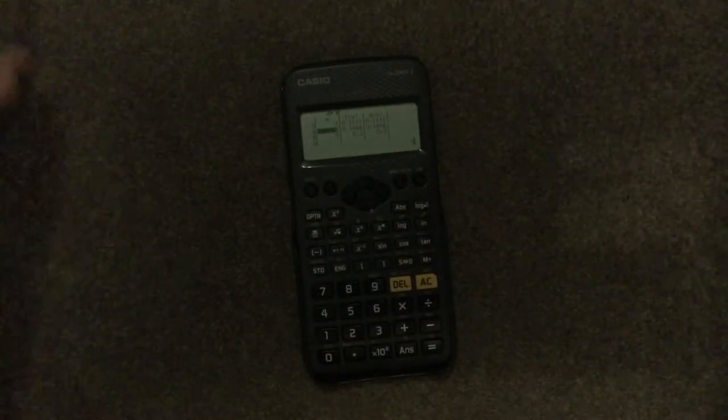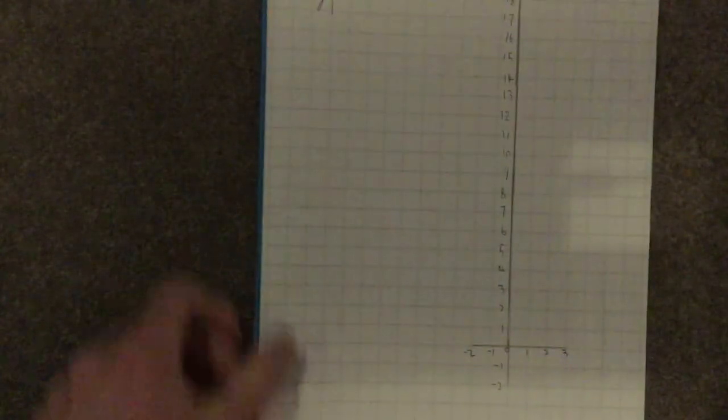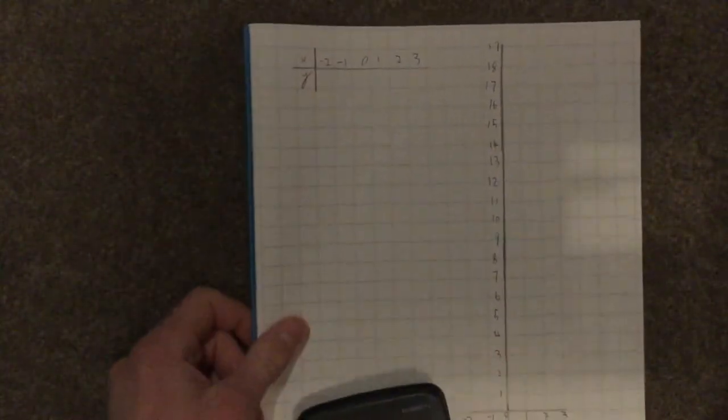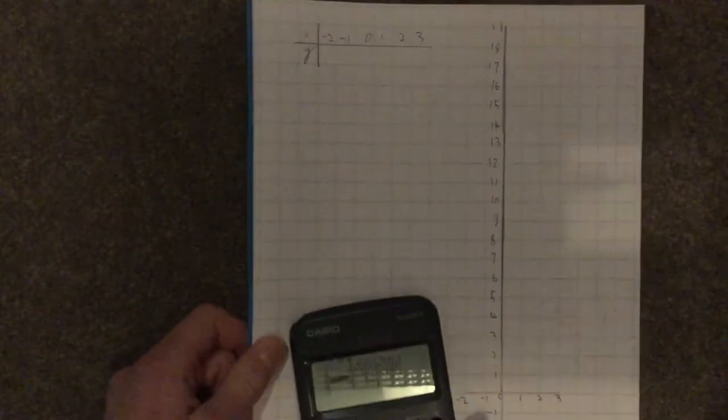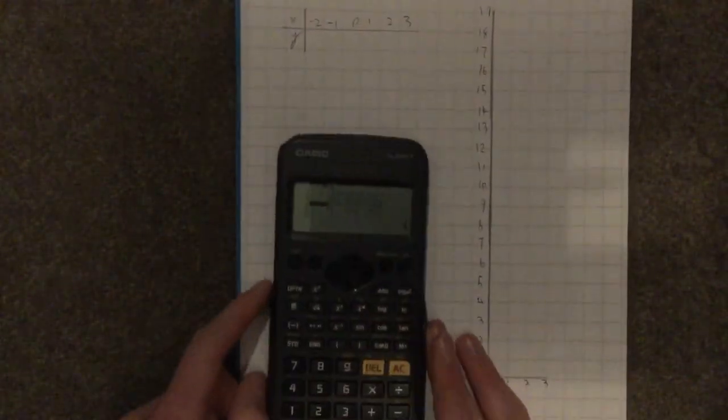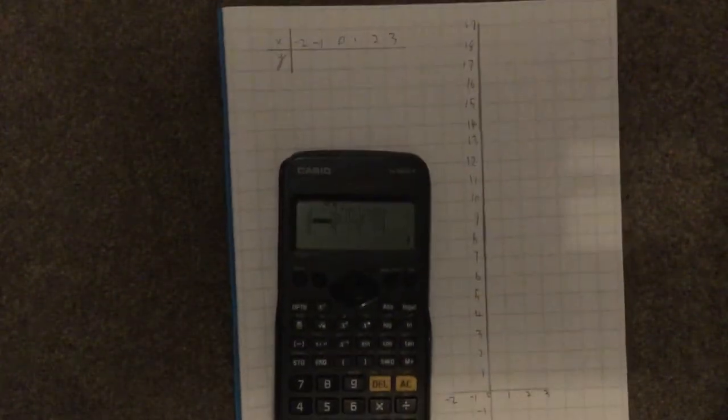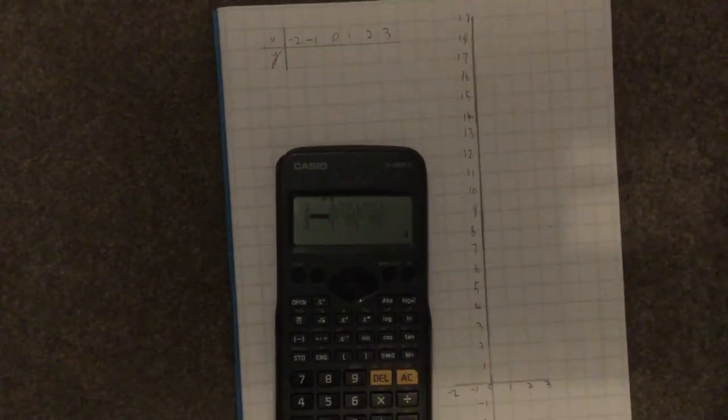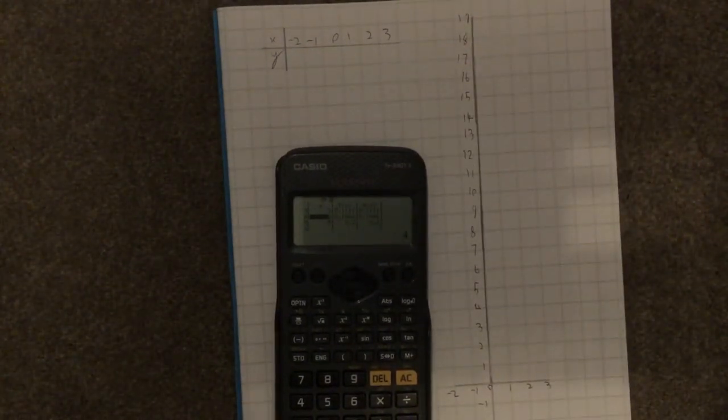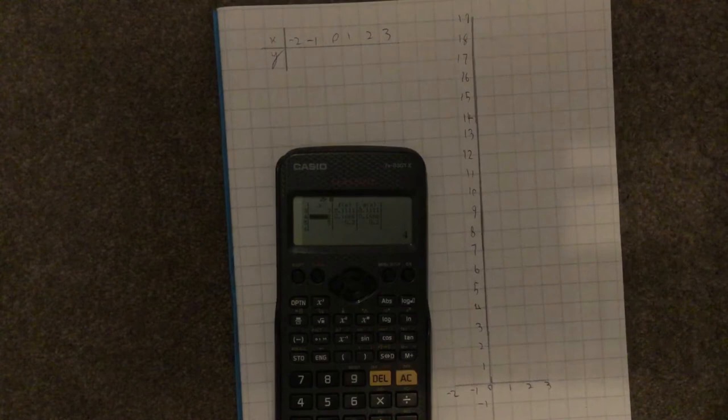Now we will move on to filling in a table of values. I've drawn this example out on this squared paper I had. I have this table at the top, and we will be using the equation y equals 2x squared plus x subtract 2.